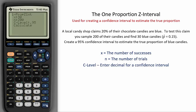A local candy shop claims 20% of their chocolate candies are blue. To test this claim, you sample 200 of their candies and find 30 blue candies. The number of successes in this example is 30. The number of trials was 200. This is a sample proportion of 0.15.